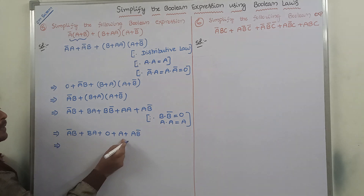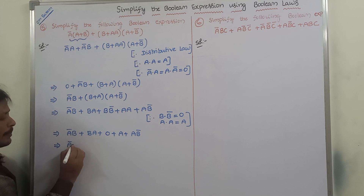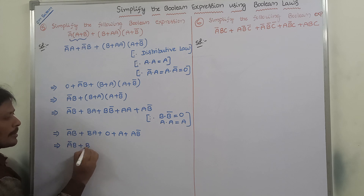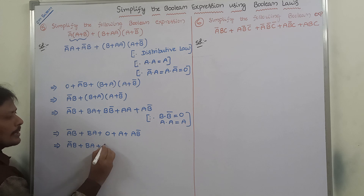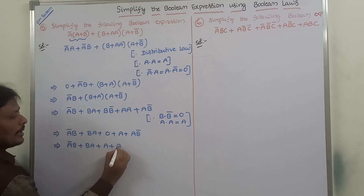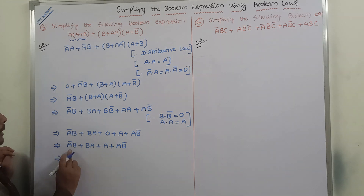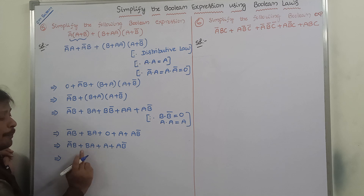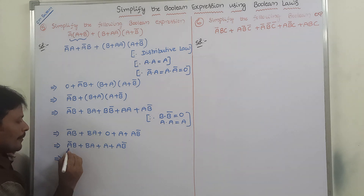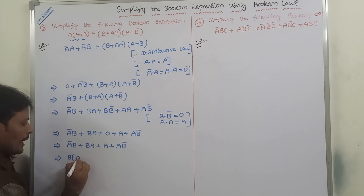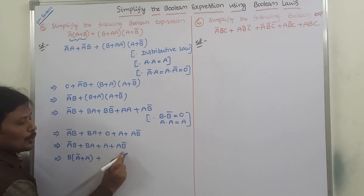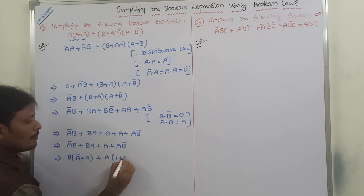0 plus something is nothing but something. So we have: A-bar·B plus B·A plus A·A plus A·B-bar. From the first two terms we separate B, after separating B we get B·(A-bar plus A). From the last two terms we separate A, giving us A·(1 plus B-bar).